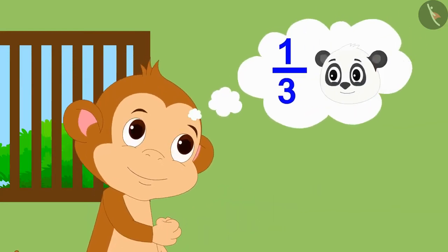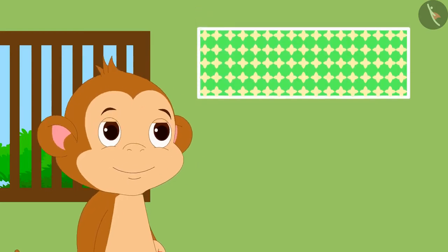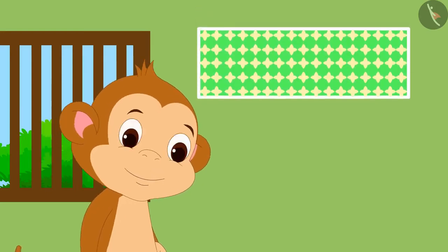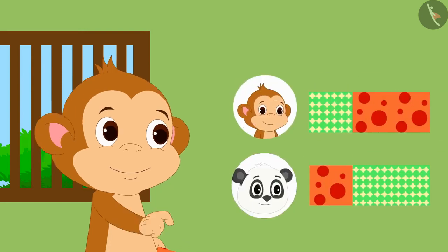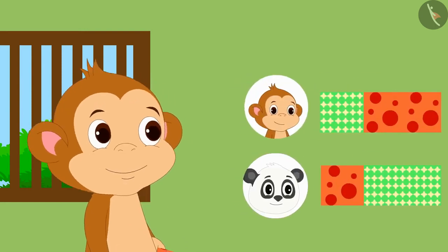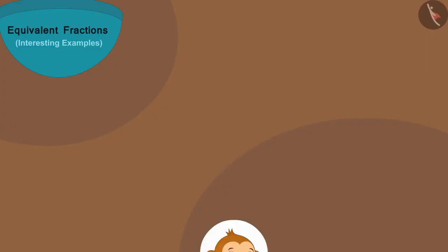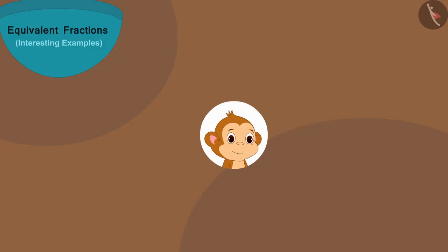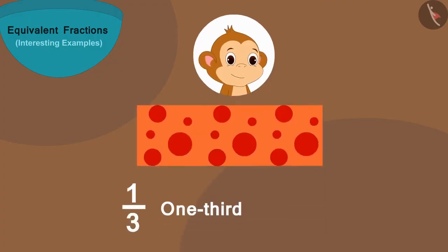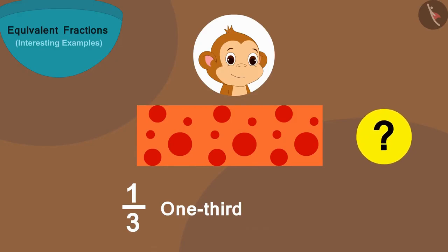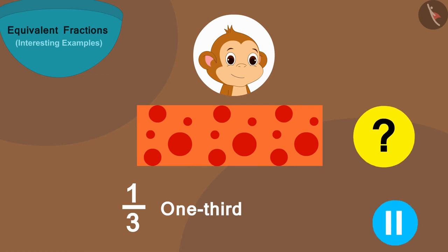In this way they will have two different designs of cloth. Children, can you tell how Babban can make one-third of his cloth, and how long will it be? If you wish to, you can stop the video and find the answer.